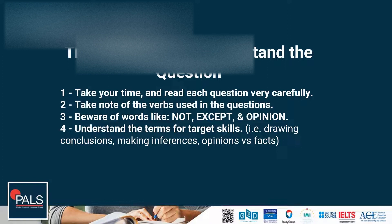Another tip for realizing what the question wants is to take note of the verbs used in the questions — the verb is going to be what it's asking for. Be especially aware of words like 'not,' 'except,' 'opinion,' etc. We can get caught up reading through the question and, even though those words are often in bold, we can miss them. Then we're finding the right information — it's just the opposite of what the question is asking for.